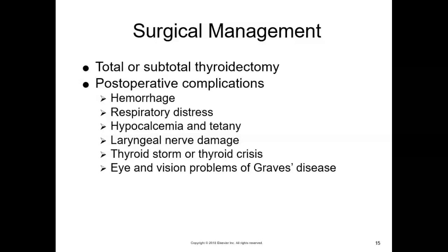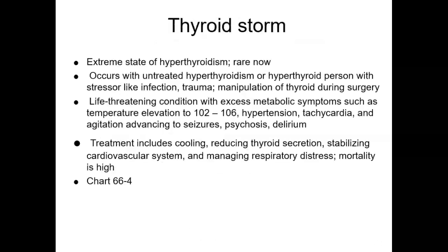Thyroid storm, or thyroid crisis, is a life-threatening event that occurs in patients with uncontrolled hyperthyroidism, most often with Graves' disease. Symptoms develop quickly and the problem is fatal if left untreated. It is often triggered by stressors such as trauma, infection, diabetic ketoacidosis, and pregnancy. Other conditions that can lead to thyroid storm include vigorous palpation of the goiter, exposure to iodine, and radioactive iodine therapy. Although thyroid storm after surgery is less common due to pre-operative drug therapy, it can still occur.